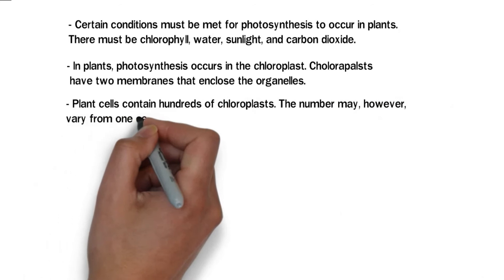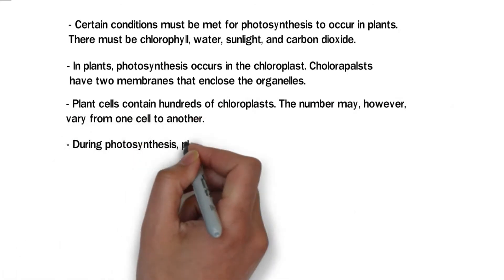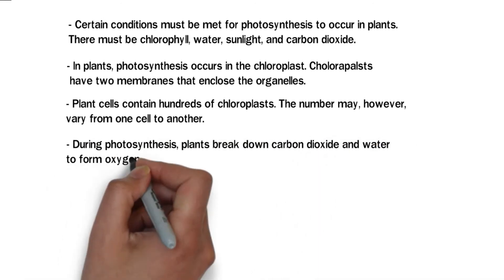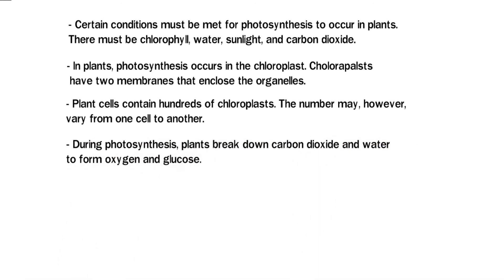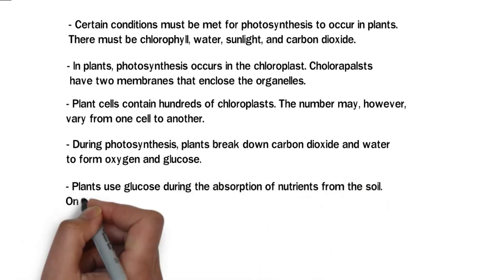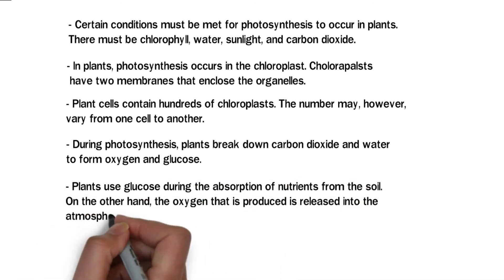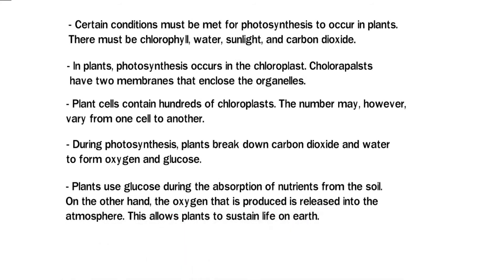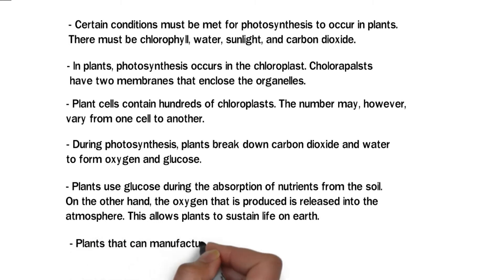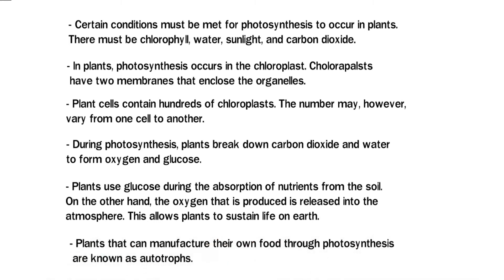Plant cells contain hundreds of chloroplasts, though the number may vary from one cell to another. During photosynthesis, plants break down carbon dioxide and water to form oxygen and glucose. Plants use glucose during the absorption of nutrients from the soil, while the oxygen produced is released into the atmosphere, allowing plants to sustain life on earth. Plants that manufacture their own food through photosynthesis are known as autotrophs.